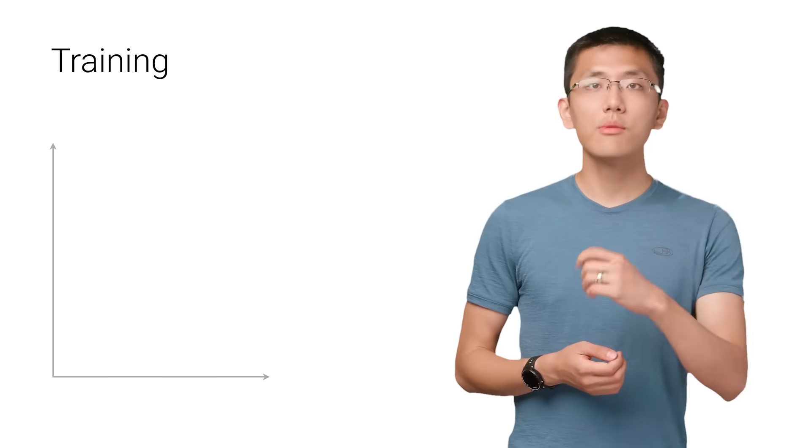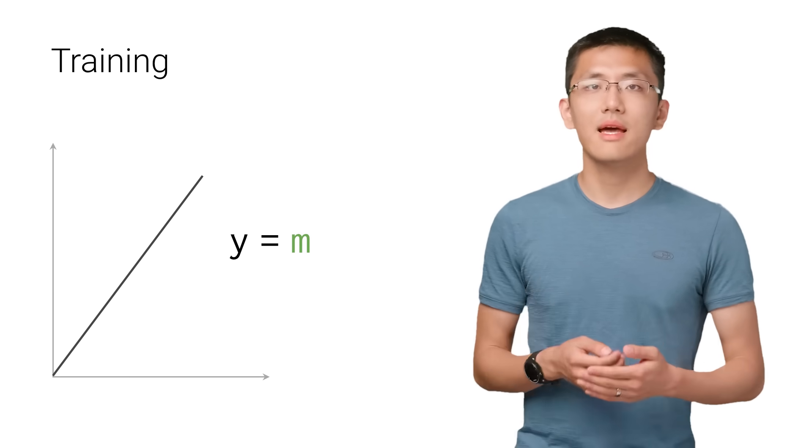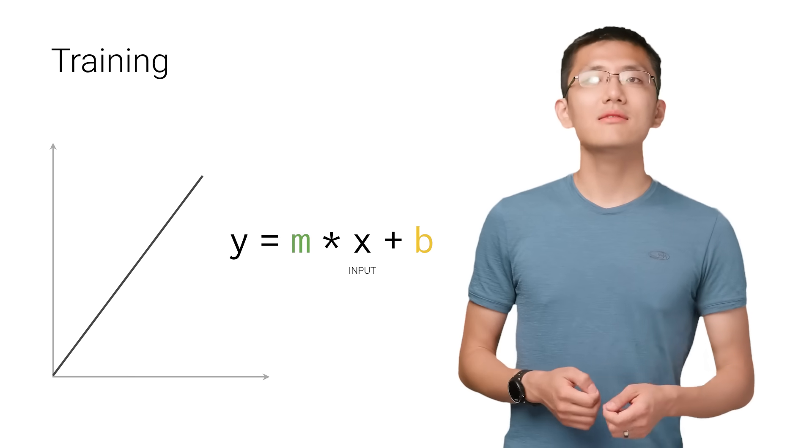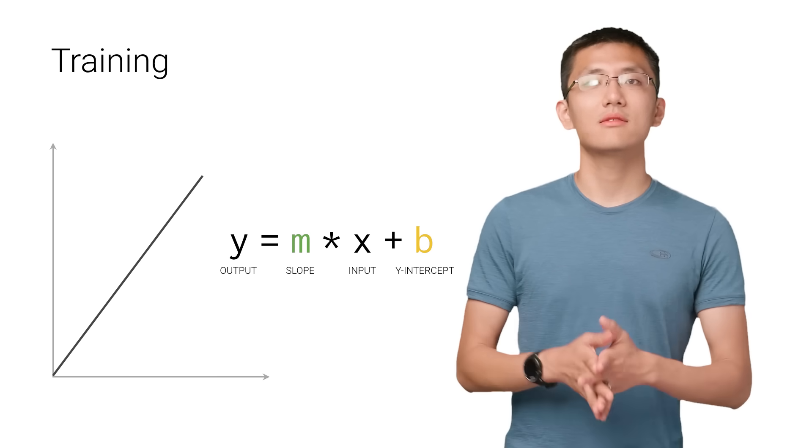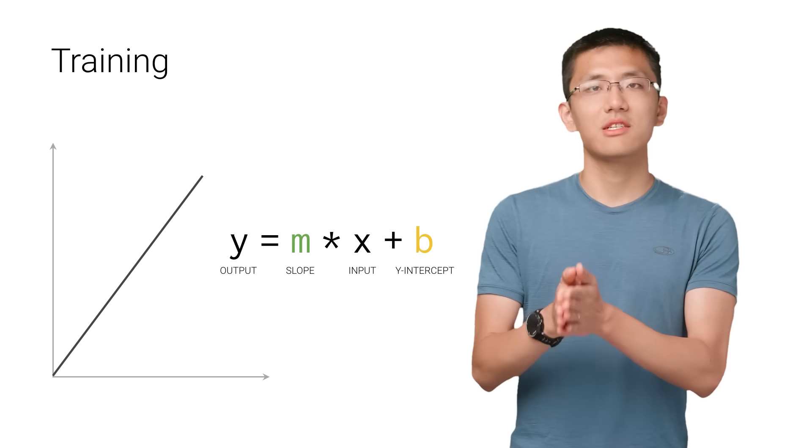In particular, the formula for a straight line is y equals mx plus b, where x is the input, m is the slope of the line, b is the y intercept, and y is the value of the line at that position, x.